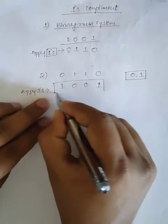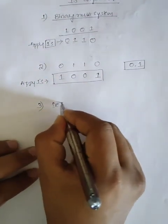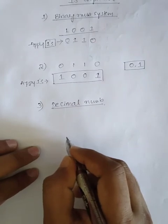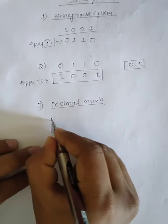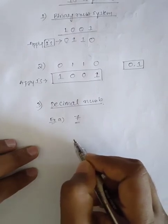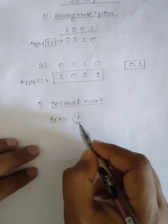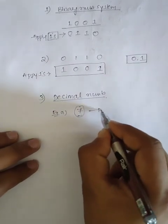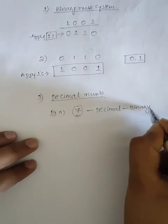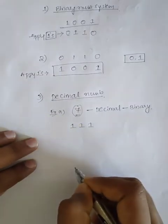Now I will take a decimal number. Decimal is base ten — numbers zero to nine are there. For example, I will take the number seven. Now you have to convert the decimal number seven into ones complement. We cannot apply the ones complement rule directly to a decimal number, so we must first convert decimal to binary. The binary equivalent of seven is 1 1 1.